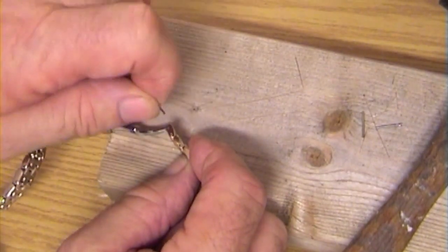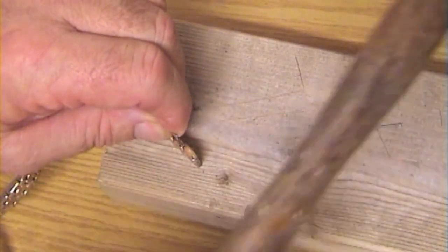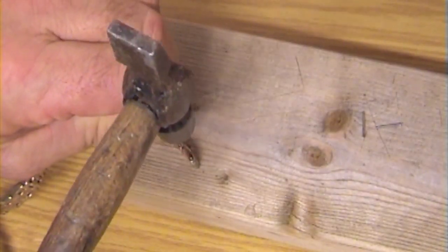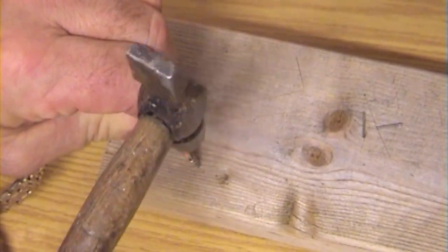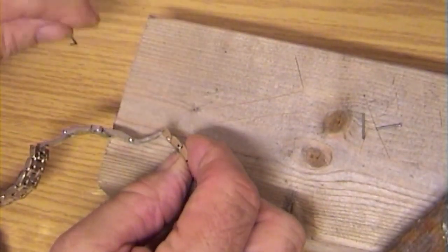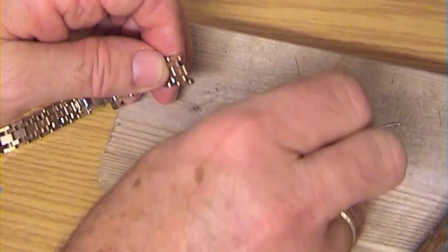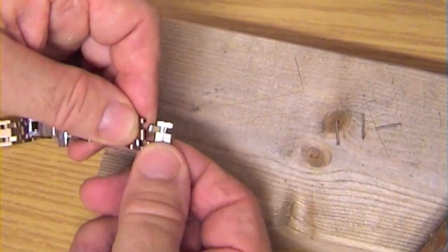Then do exactly the same thing on the next link. Same way. Push that one out. Remove the pin. And it falls into the slot. Put that one aside. And then you can remove the link.